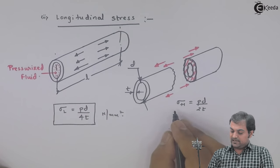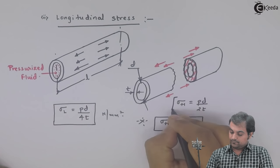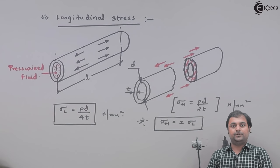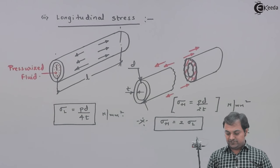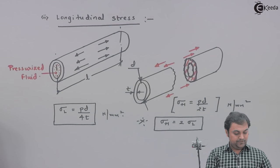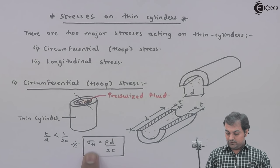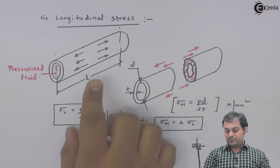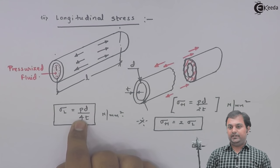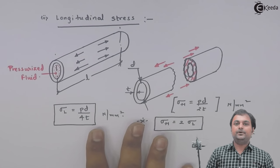As we have seen, hoop stress or circumferential stress is PD / 2t and longitudinal stress is PD / 4t. In other words, hoop stress is equal to twice the longitudinal stress. Hoop stress is the stress which causes the cylinder to break circumferentially into two halves — top and bottom. Longitudinal stress breaks the cylinder along its length. Hoop stress is double that of longitudinal stress — these concepts we have to remember regarding the thin cylinder.